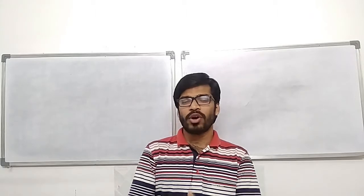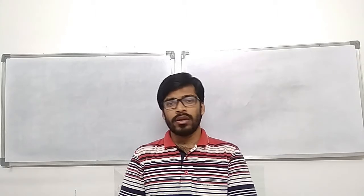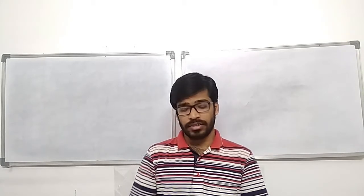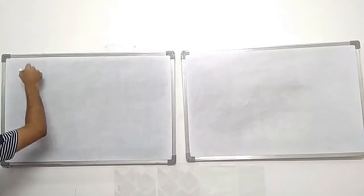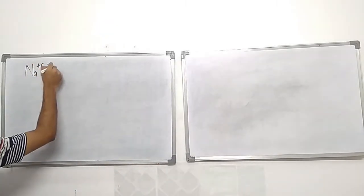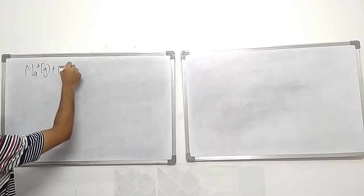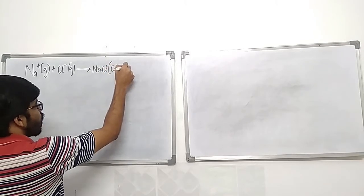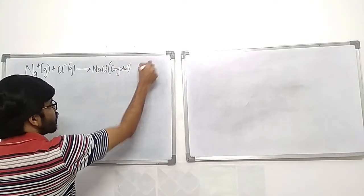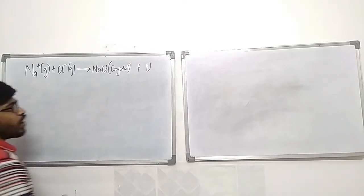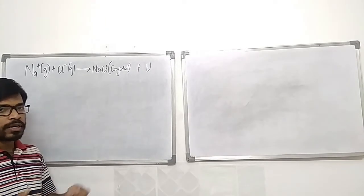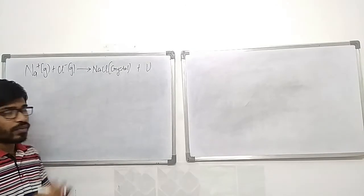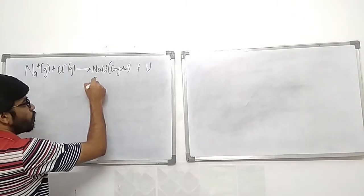Lattice energy is the amount of energy released when one gram of a crystal is formed from its ionic gaseous ions. For example, Na⁺ in the gaseous state combines with Cl⁻ in the gaseous state to produce NaCl crystals, releasing energy known as lattice energy. Lattice energy cannot be measured experimentally but can be calculated when all other thermodynamic parameters are available, as is done in the Born-Haber cycle.